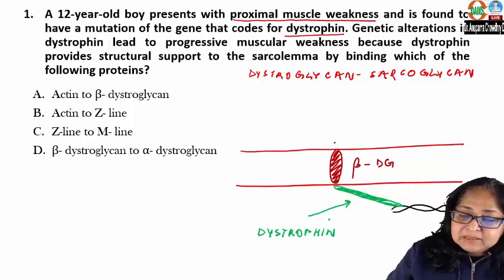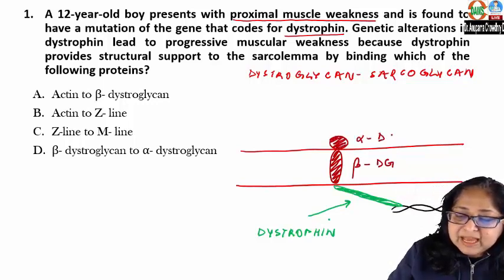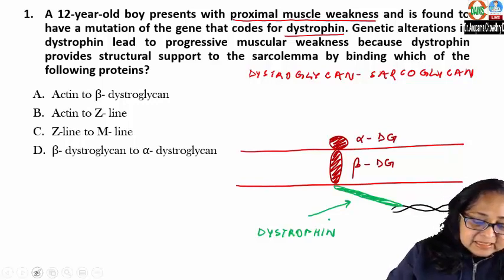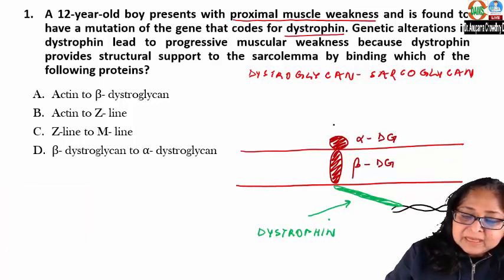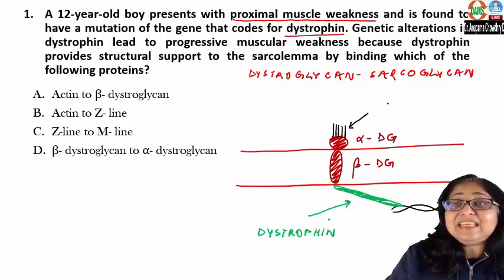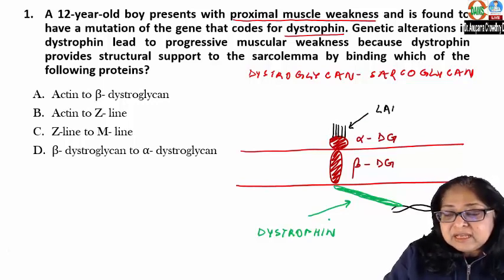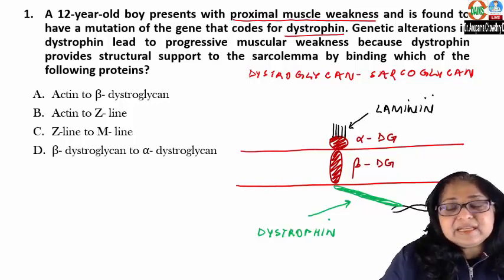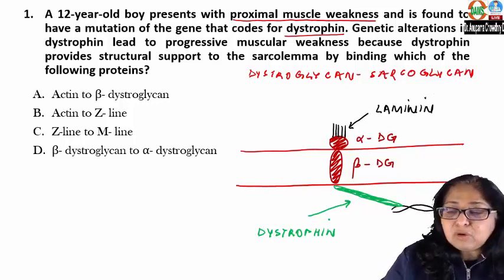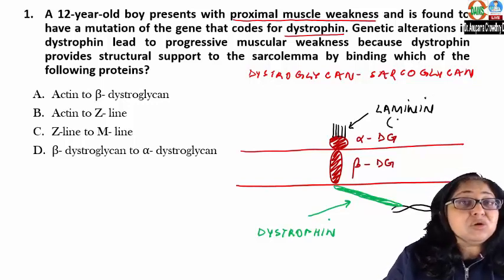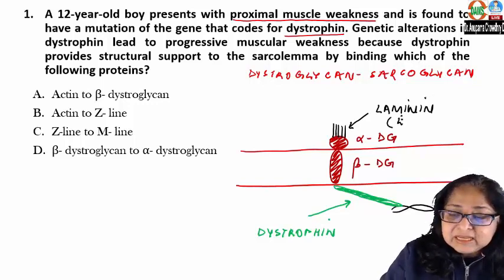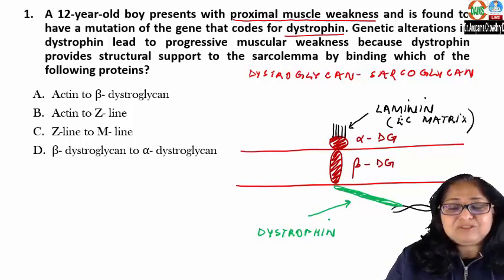Beta-dystroglycan is linked to another sarcolemma protein called alpha-dystroglycan, and alpha-dystroglycan is linked with a protein in the extracellular matrix — laminin. Specifically, alpha-dystroglycan links with the merosin unit of laminin, but laminin is not a sarcolemma protein; it is present in the extracellular matrix.